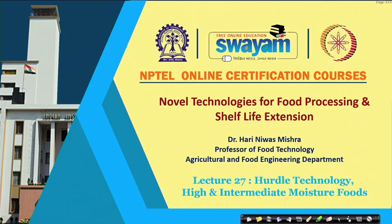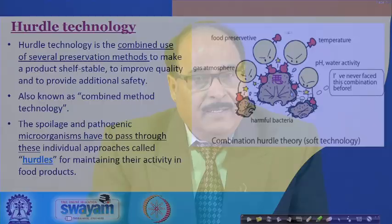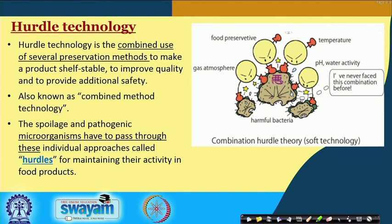Hello everybody. Let us today study another very important aspect of food processing which is known as hurdle technology. We will study what is the hurdle technology concept and its use in stabilization of high moisture or intermediate moisture foods. Hurdle technology is the combined use of several preservation methods to make a product shelf stable, to improve its quality and to provide additional safety to the product.